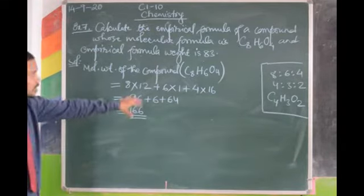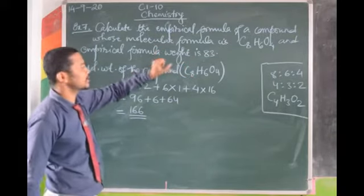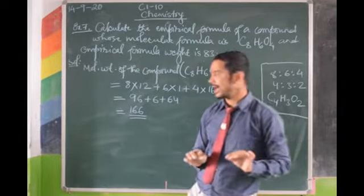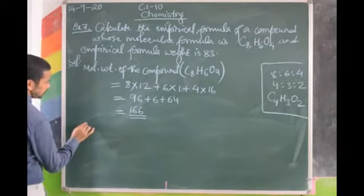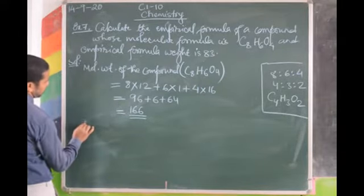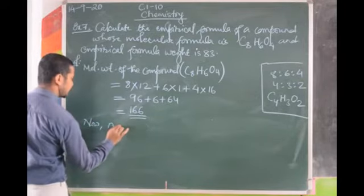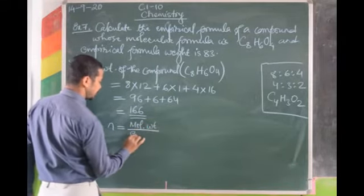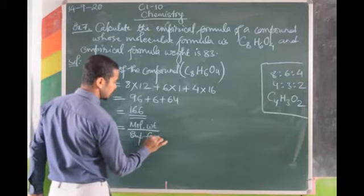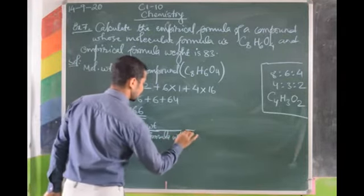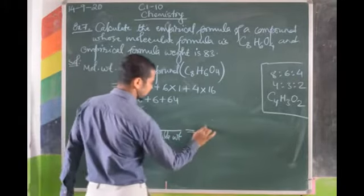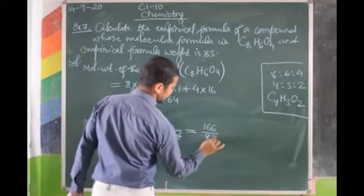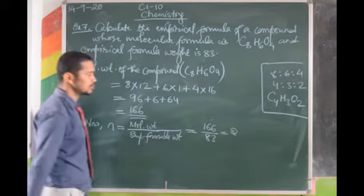We know molecular weight is 166 and we are given empirical formula weight is 83. Now we find N: N = molecular weight ÷ empirical formula weight = 166 ÷ 83 = 2. So N = 2.